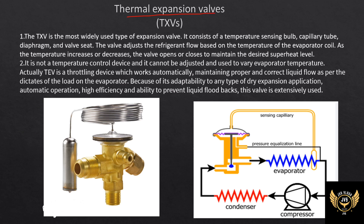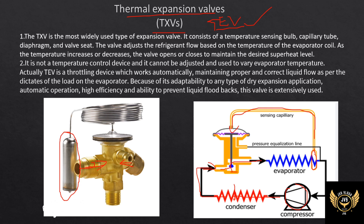First, the thermal expansion valve — it is called TEV or TXV. This is a temperature-based system. In the VCR system, after the compressor, condenser, and expansion valve, the thermal expansion valve uses a sensing bulb placed at the outlet of the evaporator. It senses the temperature and operates the valve to supply the required amount of refrigerant to the evaporator.